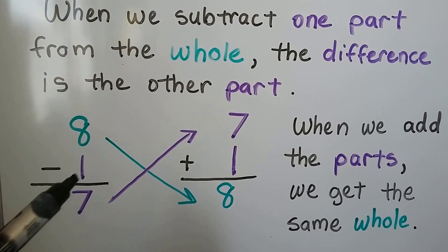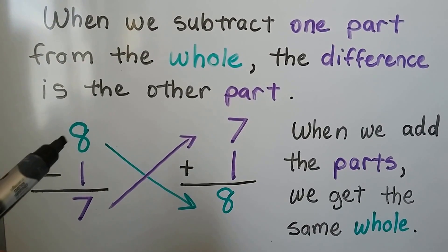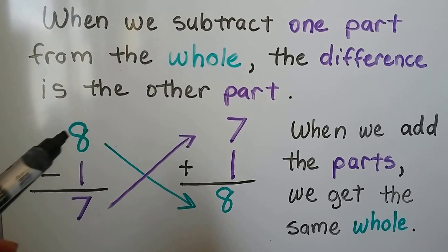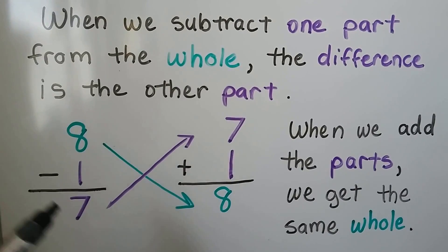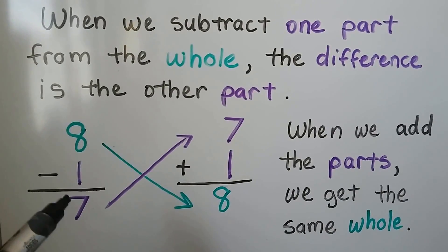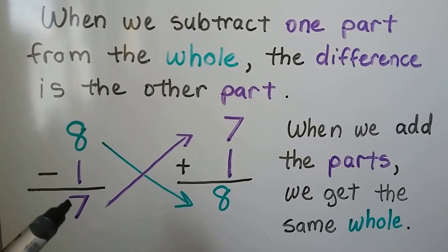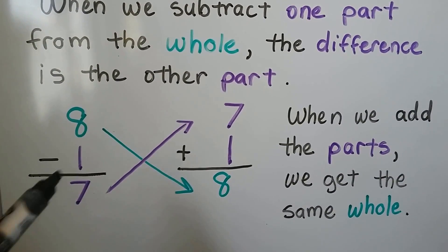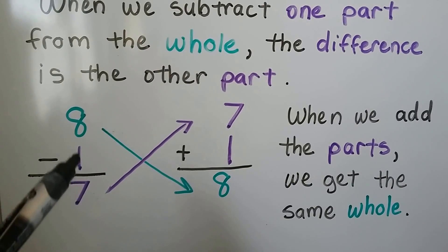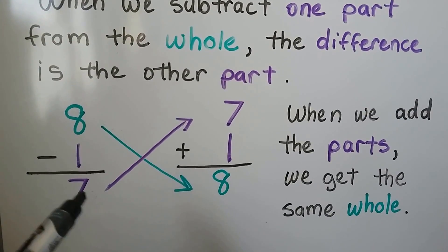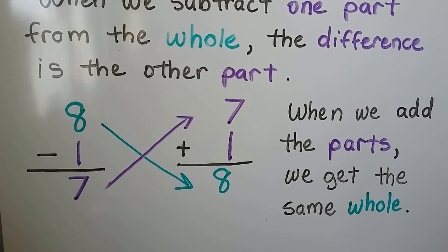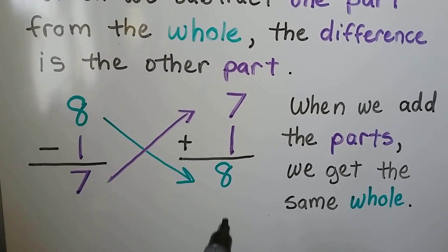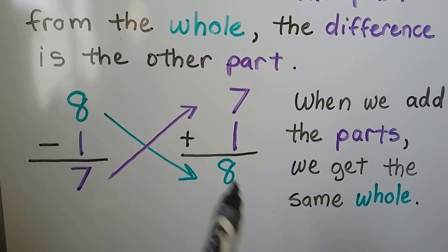When we subtract the one from the eight — one part from the whole — the difference, that's the answer in subtraction, is the other part. We can add the one and seven together. When we add the parts, we get the same whole again. We get the eight again.